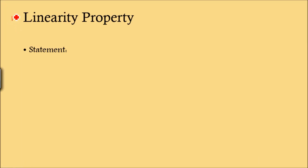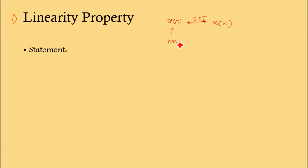The first property we are going to discuss is the linearity property. We know that generally the DFT of x of n is represented as x of k. So x of n is the time domain representation and x of k is the frequency domain representation.